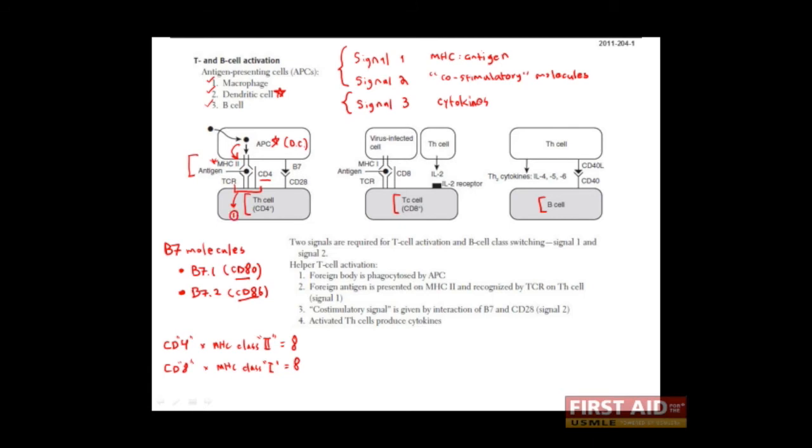But remember for proper activation, we also need signal two. Signal two is provided by antigen presenting cells, but most efficiently by dendritic cells. Here we have signal two. Here is the B7 molecule. We've not specified whether it's B7-1 or B7-2. It's being recognized by a receptor on the T cell that's known as CD28. This combination sends signal two into the T cell. This combination activates the T cell.